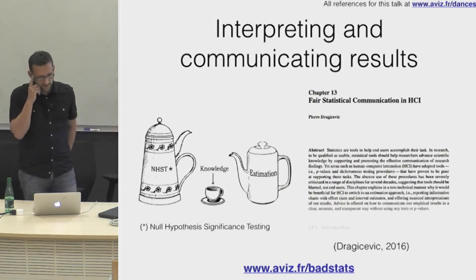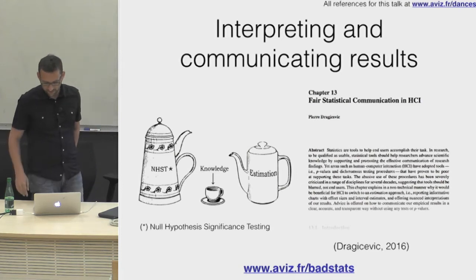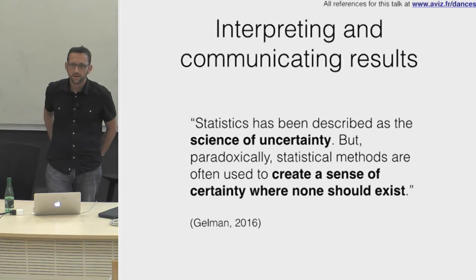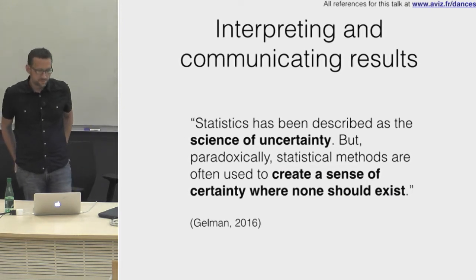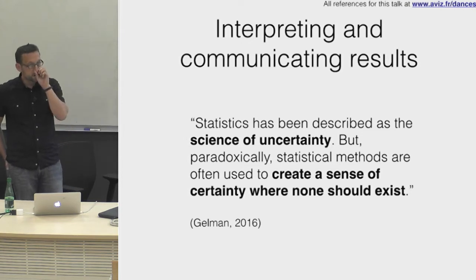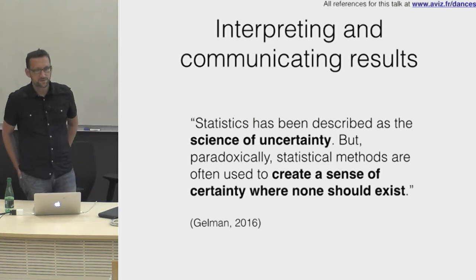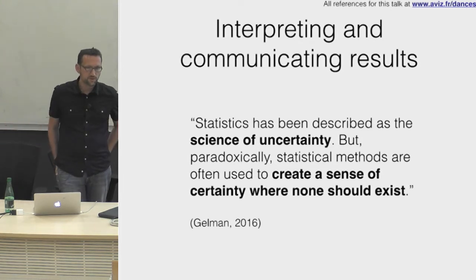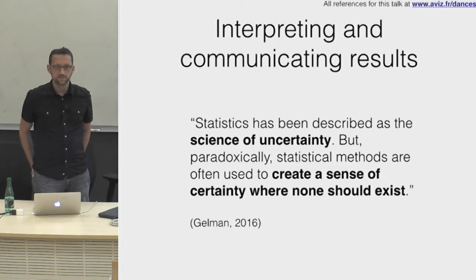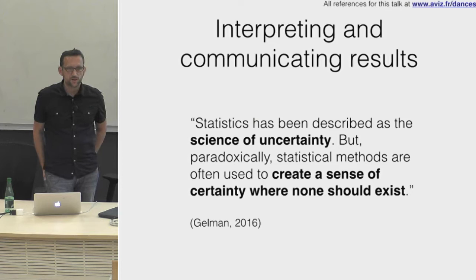The goal of this talk is to step back and try to understand what we're doing wrong, independently from the statistical tools we're using. This is well captured by a quote from applied statistician Andrew Gelman: 'Statistics has been described as the science of uncertainty, but paradoxically statistical methods are often used to create a sense of certainty when none should exist.' One reason is that we hate uncertainty — we prefer certainty, and our reviewers even more so.